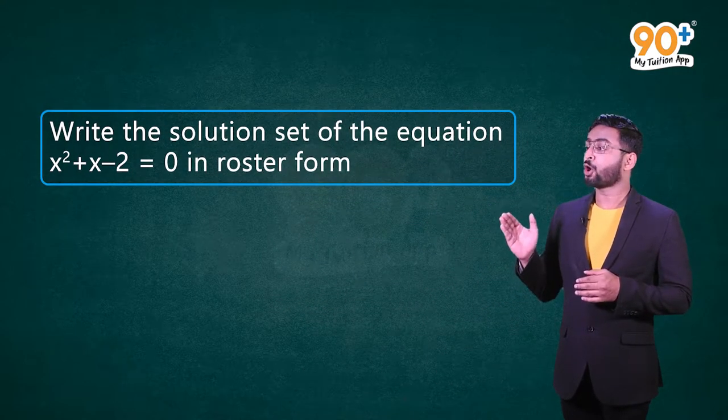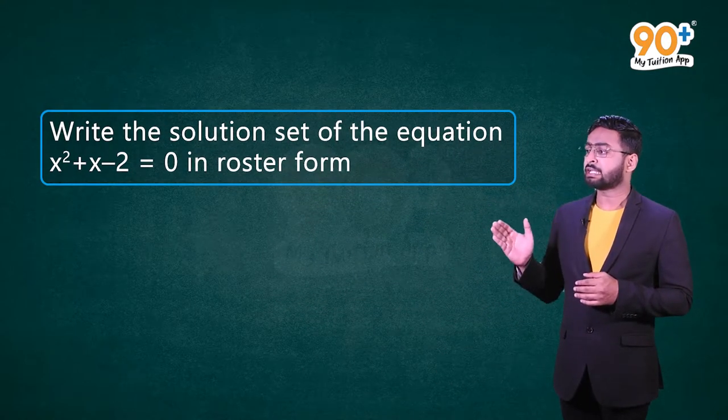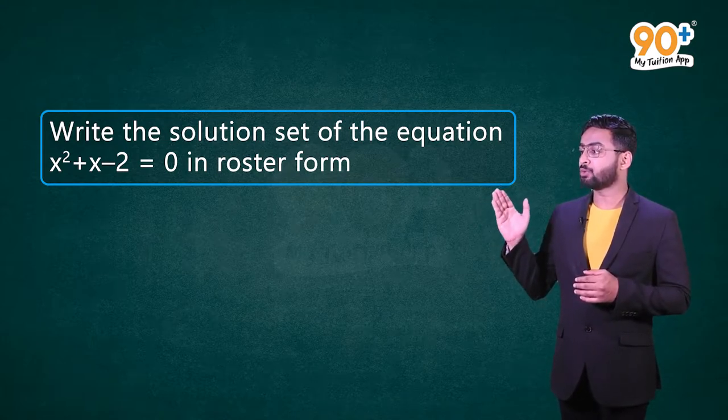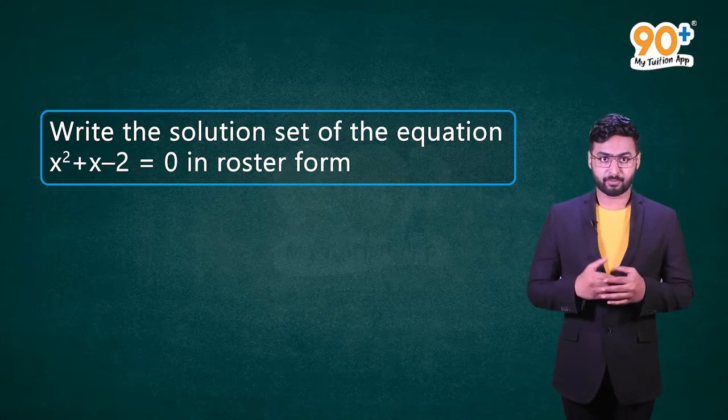So far we have seen what a set is, what things can form a set, and the ways to represent these sets. Now let's take a look at some examples for better understanding. Example 1: Write the solution set of the equation x² + x − 2 = 0 in roster form.